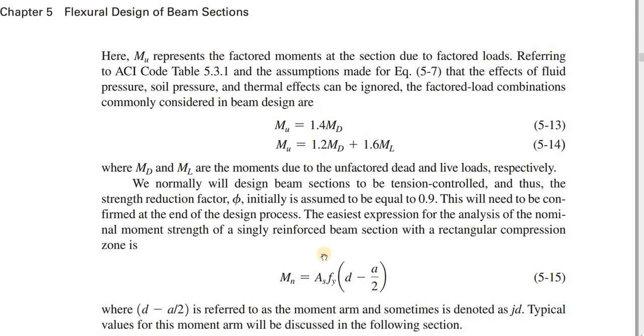Our target is that we will design a section which is a tension-controlled section. Epsilon T is greater than 0.05, for which we can use phi equals 0.9.